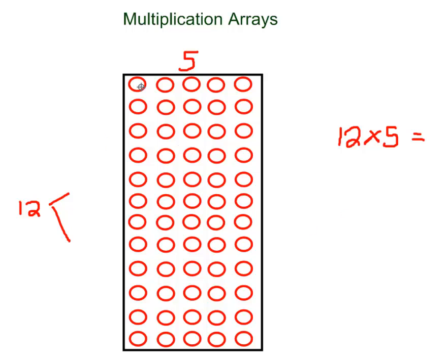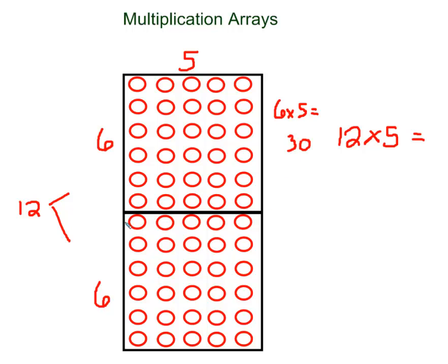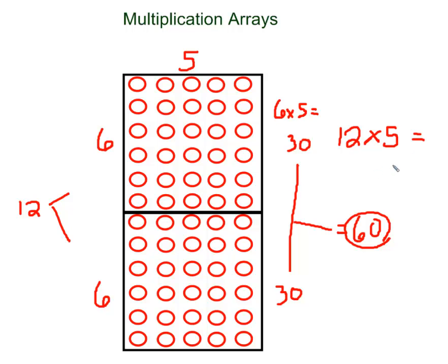That means I am going to have 6 rows: 1, 2, 3, 4, 5, 6. And another 6: 1, 2, 3, 4, 5, 6. So I have now split my array into 2 smaller pieces to make it easier to count how many pieces are in my 12 times 5 array. Now I have 6 rows of 5 — if I know my multiplication facts, 6 times 5 is 30. And down here I still have 6 rows of 5, so another 30. So 30 and 30 together make 60. So 12 rows of 5, or 12 times 5, is 60.